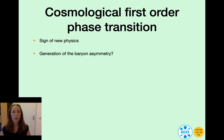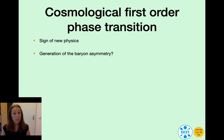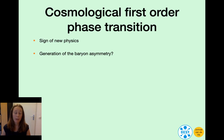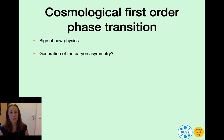So why do we care about cosmological first-order phase transitions? Well, they would be a sign of new physics. The standard model of particle physics does not predict any first-order phase transition, so observing such a signal would definitely point at the existence of new physics. We are particularly interested in this kind of new physics because it might be related to the generation of the Baryon asymmetry. One of the conditions for the generation of a matter-antimatter asymmetry is the existence of out-of-equilibrium dynamics, of which the first-order phase transition is an example.